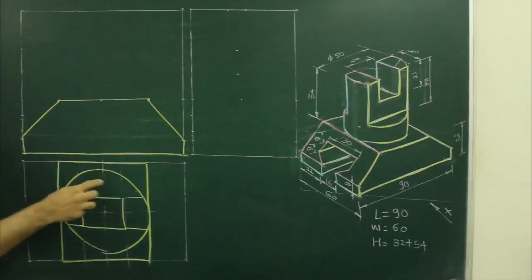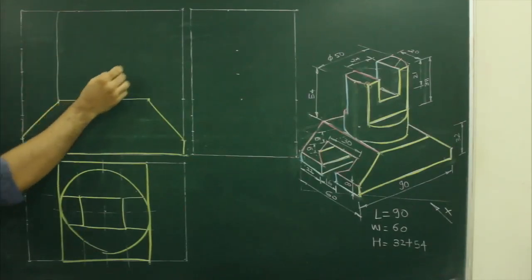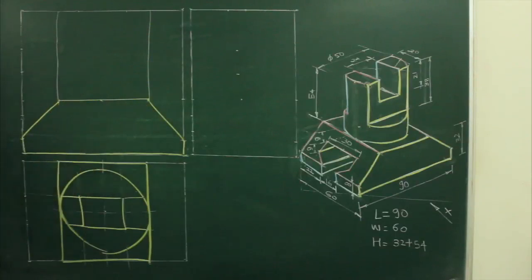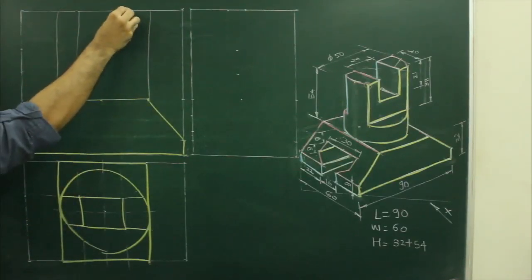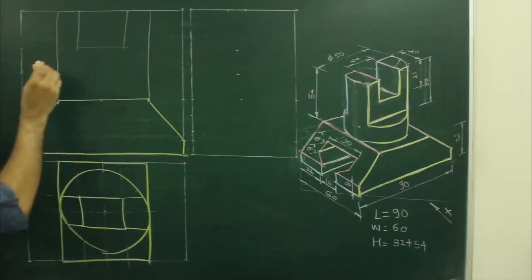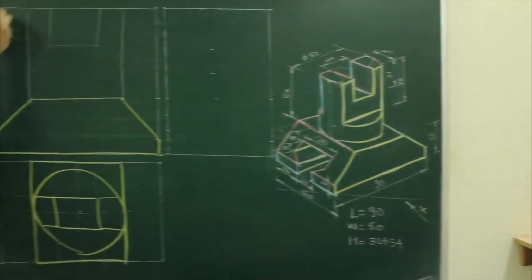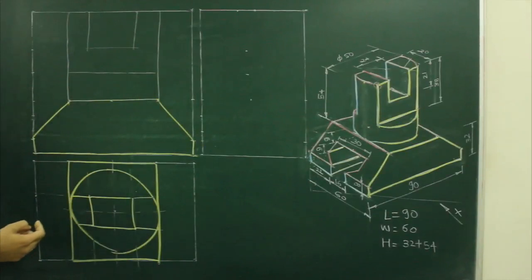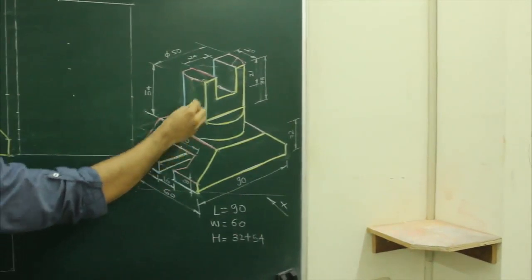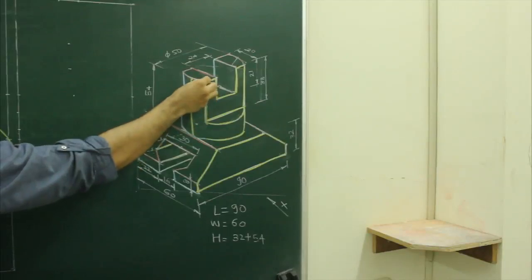After that, to draw the circular portion, we will project from here. We can project from here. This height is 21, and the other height — if you see the main diagram — is 38. So from the top view, we will take 38 and draw. When you see in the front view, see our main diagram — when you see from this side, you will see this edge plus you will see this edge. What we have drawn just now is this extreme edge. But we still need to draw this edge.